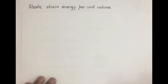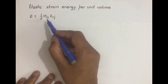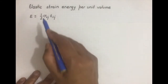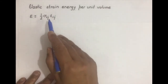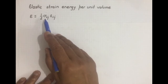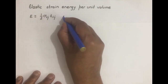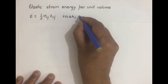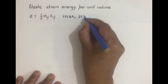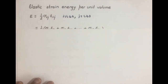We know that elastic strain energy per unit volume of any body is given as one-half times stress times strain: (1/2) σᵢⱼ εᵢⱼ. This means we are summing up the products of stress and the corresponding strain, where both I and J go from 1 to 3, so there are actually 9 terms in this expression.